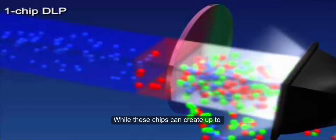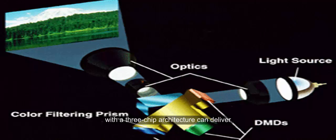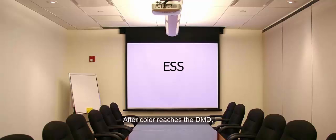While these chips can create up to 16.7 million colors, a DLP projector with a 3-chip architecture can deliver up to 35 trillion colors. After color reaches the DMD, the image is fed through the lens and onto the projection screen.